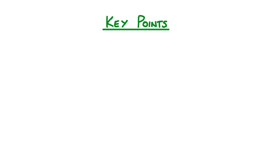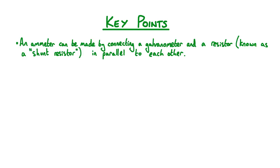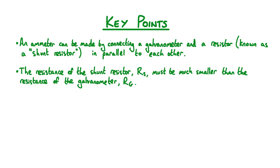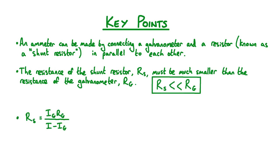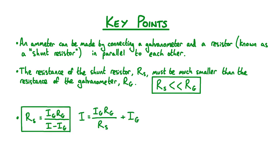Let's recap the key points from this lesson. An ammeter can be made by connecting a galvanometer and a shunt resistor in parallel with each other. The resistance of the shunt resistor RS must be much smaller than the resistance of the galvanometer RG. If we have a galvanometer with a maximum measurable current IG and a resistance RG, then to construct an ammeter with range I, we need a shunt resistor with resistance RS equals IgRg divided by (I minus Ig). We can also rearrange this expression to calculate the range of a given ammeter.